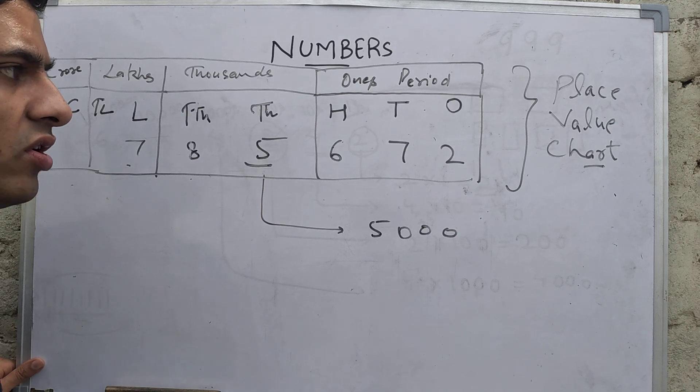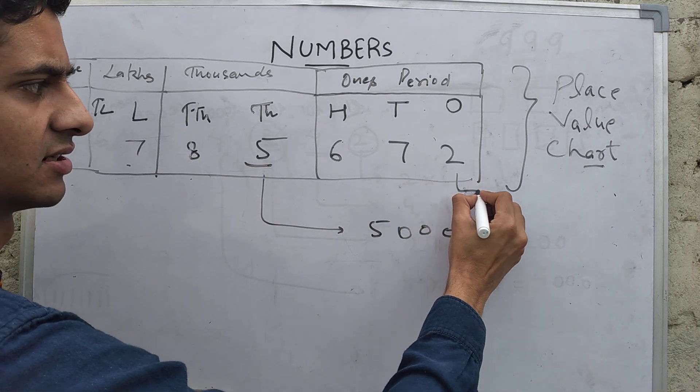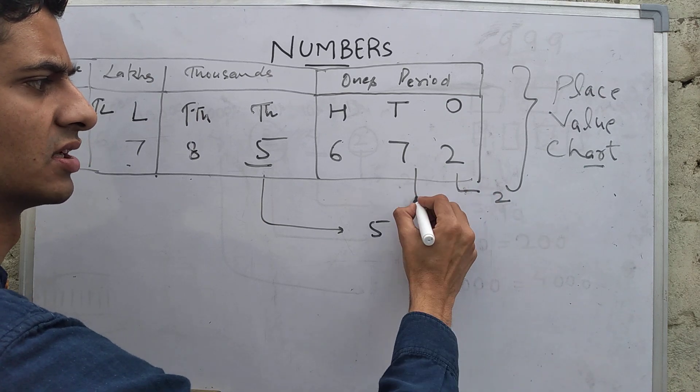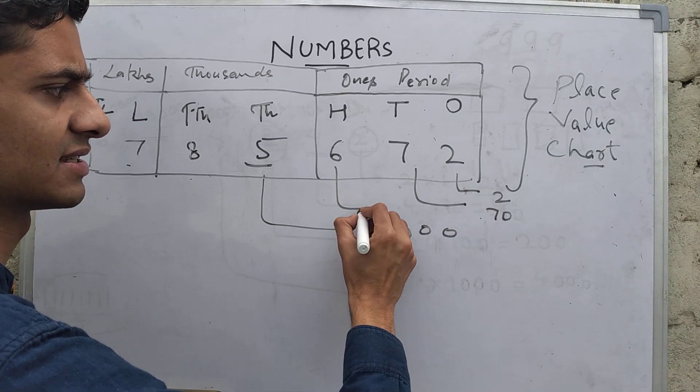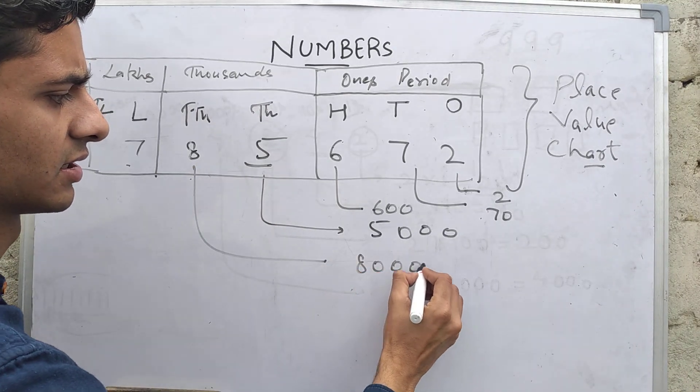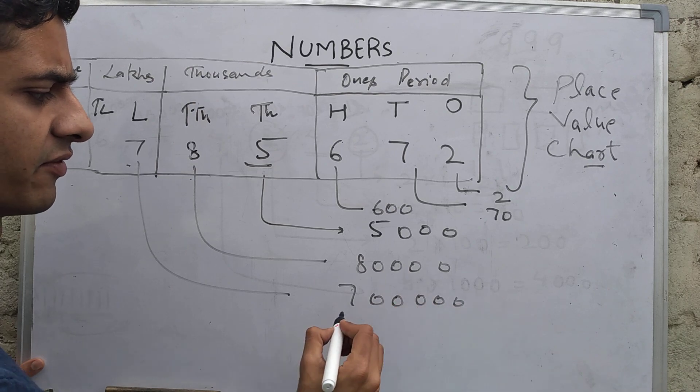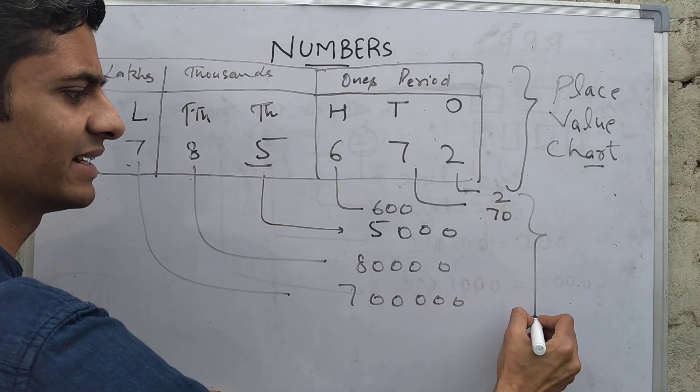So now, if you expand it, okay, I have written this two, this has 70, this has 600, this has 80,000, this has 7—one, two, three, four, five lakh.